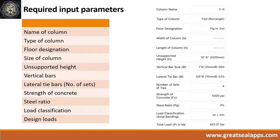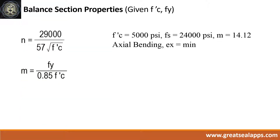Vertical bars: 1-inch diameter at grade 60. Lateral tie bars: 3/8-inch diameter at grade 33. Strength of concrete: 5,000 psi. Steel ratio: 4%. Actual bending of minimum eccentricity at strong or x-axis. Total load: 453.37 kips.